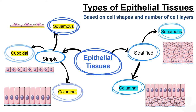Squamous epithelial cells appear as thin, flattened-shaped cells with an oval-shaped nucleus. Cuboidal epithelial cells are square or cube-shaped cells having a similar width-to-height ratio; the nucleus is large, round, and centrally located. Columnar epithelial cells have a rectangular or column shape, meaning they are taller than they are wide, and the elongated nucleus is usually located near the basement membrane.